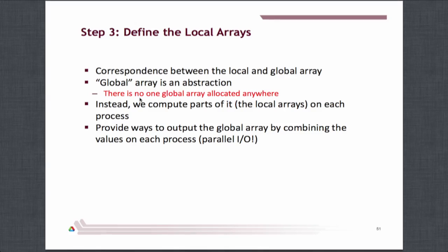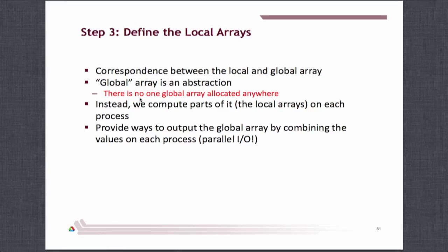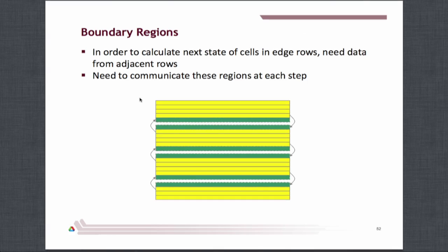The other funny thing about introducing a file system into a message-passing programming model is that all of a sudden you have what looks like a pool of distributed shared memory where you didn't have that before. Don't reroute your messages through the file system — people do that, but that's really not the best thing. When we think about a global array, a logically global array but really just an abstraction, we're going to present pieces of that through parallel I/O. Each process has these big chunks, and the only data they need to exchange are the boundaries.